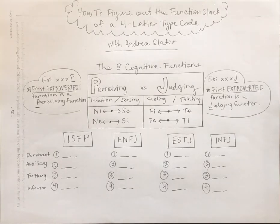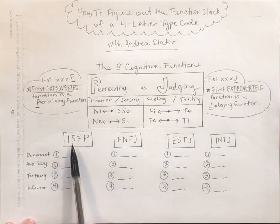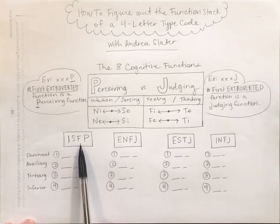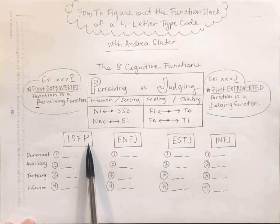A type code will show four different letters. The first letter will either be E or I, the second will either be N or S, then F or T, and lastly J or P.